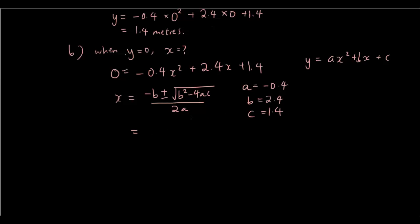So putting these numbers into our equation I have negative 2.4 plus minus square root of 2.4 squared minus 4 times negative 0.4 times 1.4 over 2 times negative 0.4.